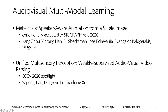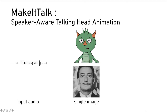The first work is conditionally accepted to SIGGRAPH Asia this year, and the second work will be presented next week by Yabong. Let me show a quick preview of what Make It Talk can do. Make It Talk is a deep learning method that automatically animates 2D portrait images. Given only speech as input, we can create dynamic videos from a single static image.